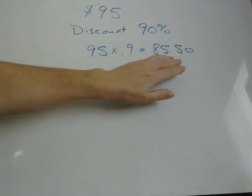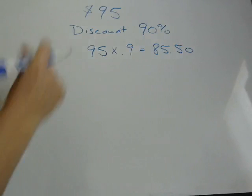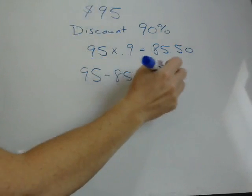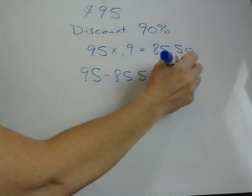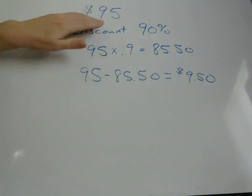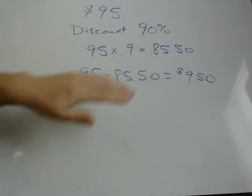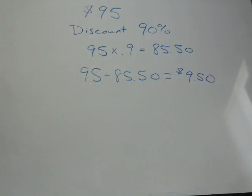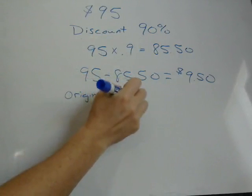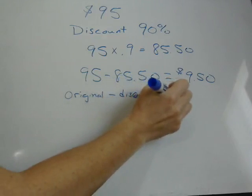So $85.50 is the discount amount. To find the final selling price, you take the original minus the discount and you get the final price of $9.50. So this dress that originally cost $95, if it's on sale at 90% off, you're only going to pay $9.50 for it. You take the original minus the discount to get the final.